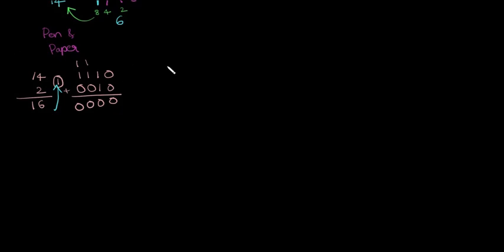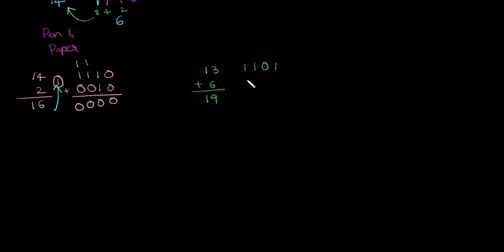Let us consider another example: 13 plus 6. 13 plus 6 is 19. We can write 13 in binary as 1,1,0,1 — since 14 in binary is 1,1,1,0, we subtract 1 to get 1,1,0,1. And 6 can be represented as 0,1,1,0. Adding: 1 plus 0 is 1, 1 plus 1 is 0 carry 1, 0 plus 1 plus 1 is 0 carry 1, and again carry 1 out from the MSB — overflow has occurred here too.